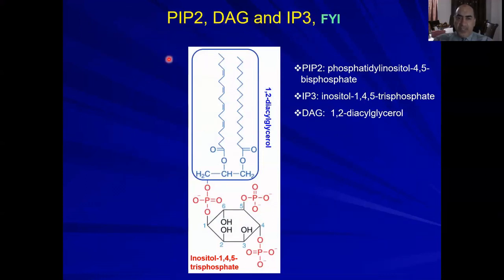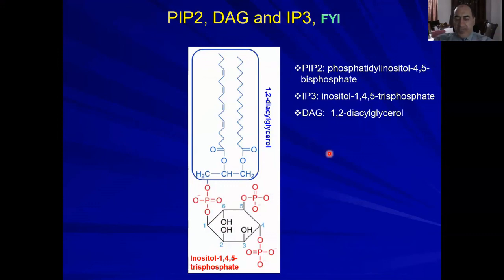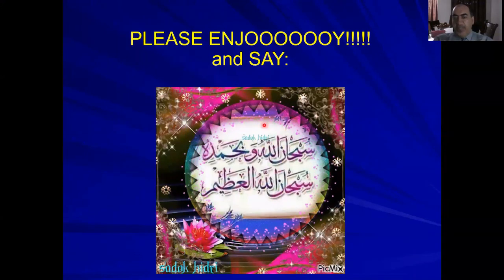Just for your information and to help you visualize: PIP2 (phosphatidylinositol bisphosphate) is split into DAG (diacylglycerol) and IP3 (inositol trisphosphate). You don't need to memorize these structures, but just to help you imagine these molecules. That's all — please enjoy.